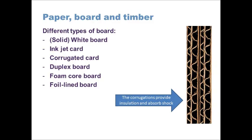Duplex board relates to the word duplex, meaning two sides. It has two different finishes: on one side there's a shiny, printable surface, and on the inside a cheaper, unfinished surface. A cereal box is a good example — on the outside you want high quality printed graphics to sell the product, but on the inside it doesn't matter, so an unfinished gray or buff surface is used. The key point is that the outside graphics look good.